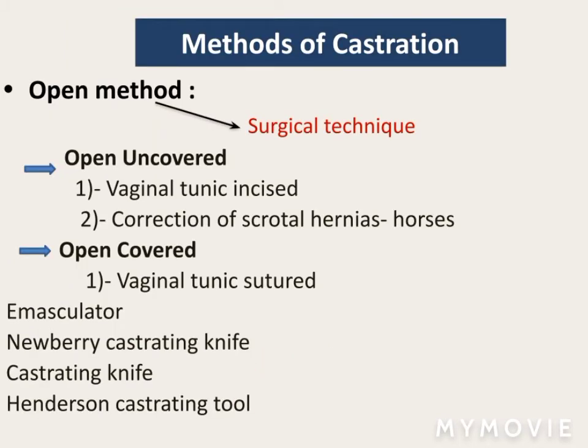Disadvantages of castration in animals are depression, impotence, sterility, obesity, osteoporosis, hot flashes, and genital modification. Methods of castration: the most common method is the open method. It is a surgical technique divided as uncovered and covered, as shown in the slide.